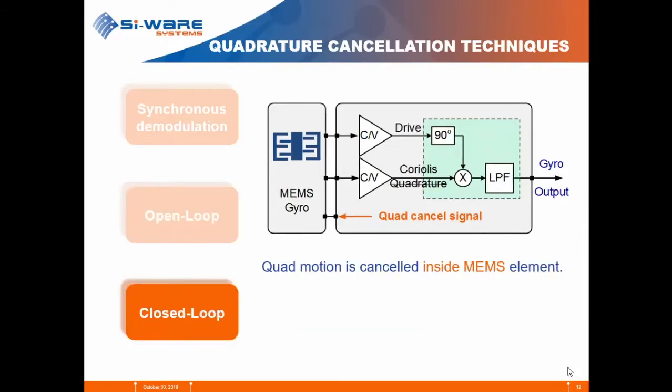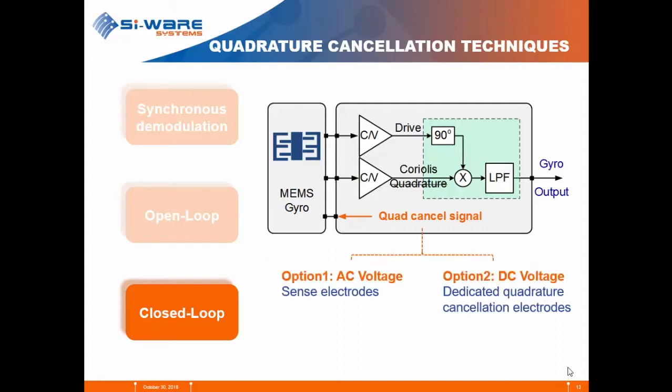The third category is closed loop, where the quadrature error is cancelled inside the MEMS itself. This can be done using two options: option one is a feedback signal as an AC voltage applied to the sense electrodes, and option two is a DC voltage applied to specially dedicated quadrature cancellation electrodes.